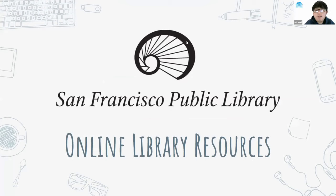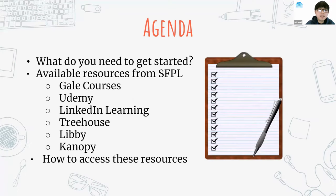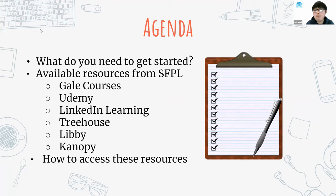Today we're going to go over online library resources. The agenda for today would be: I'm going to go over what you need to get started, the various available resources from SFPL such as Gale Courses, Udemy, LinkedIn Learning, Treehouse, Libby, and Canopy, and how to access these resources. The library has a lot of resources and we might not cover all of them, but we'll try to cover these on the list.